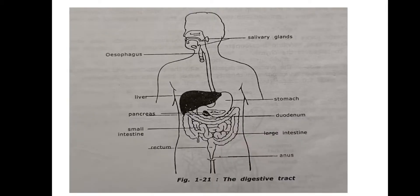This is the digestive tract. It consists of the mouth and buccal cavity, esophagus and salivary glands, then the stomach, liver and pancreas, and the small intestine.